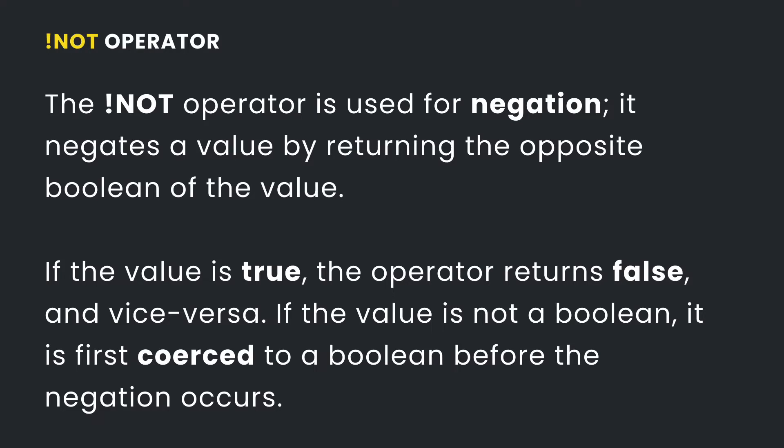The not operator is used for negation. This operator negates a value by returning the opposite boolean of that value. If that value is a boolean true, the not operator would return false. And if the value is a boolean false, the operator would return true. And if the value is not a boolean, type coercion would occur where the value would first be converted to a boolean context and the not operator would return the opposite.